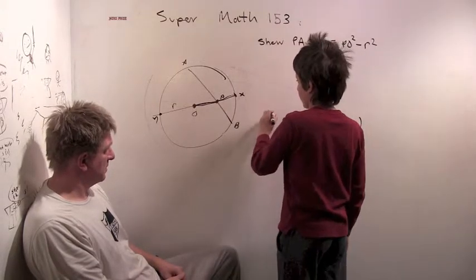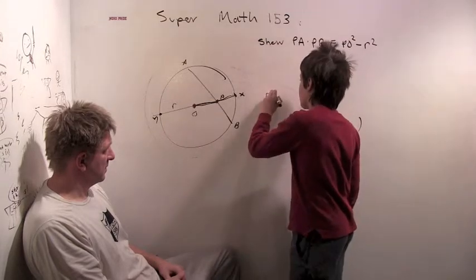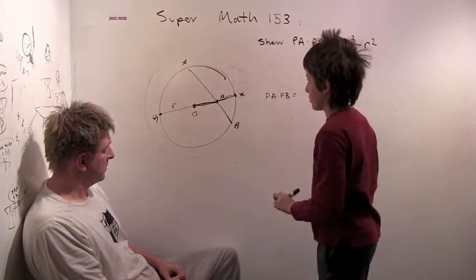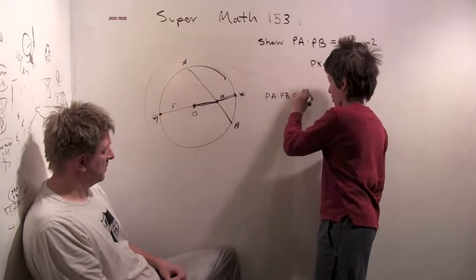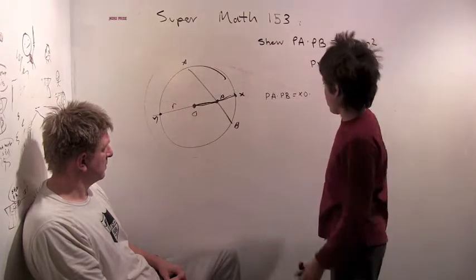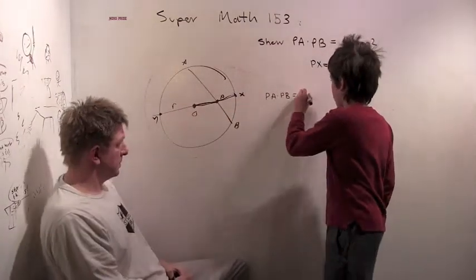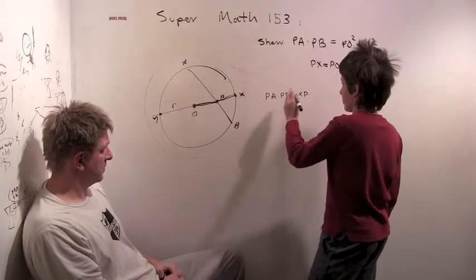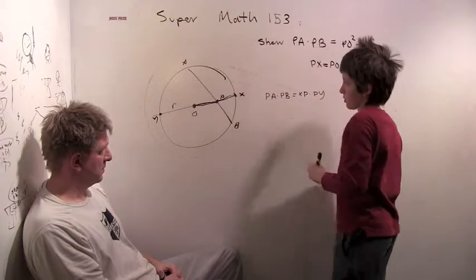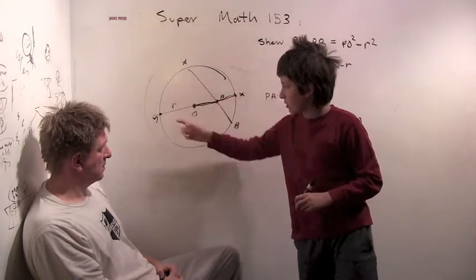So, P, A equals X, O times, oh, no, no, no, no, it's X, P, times P, Y. Okay. This times that.